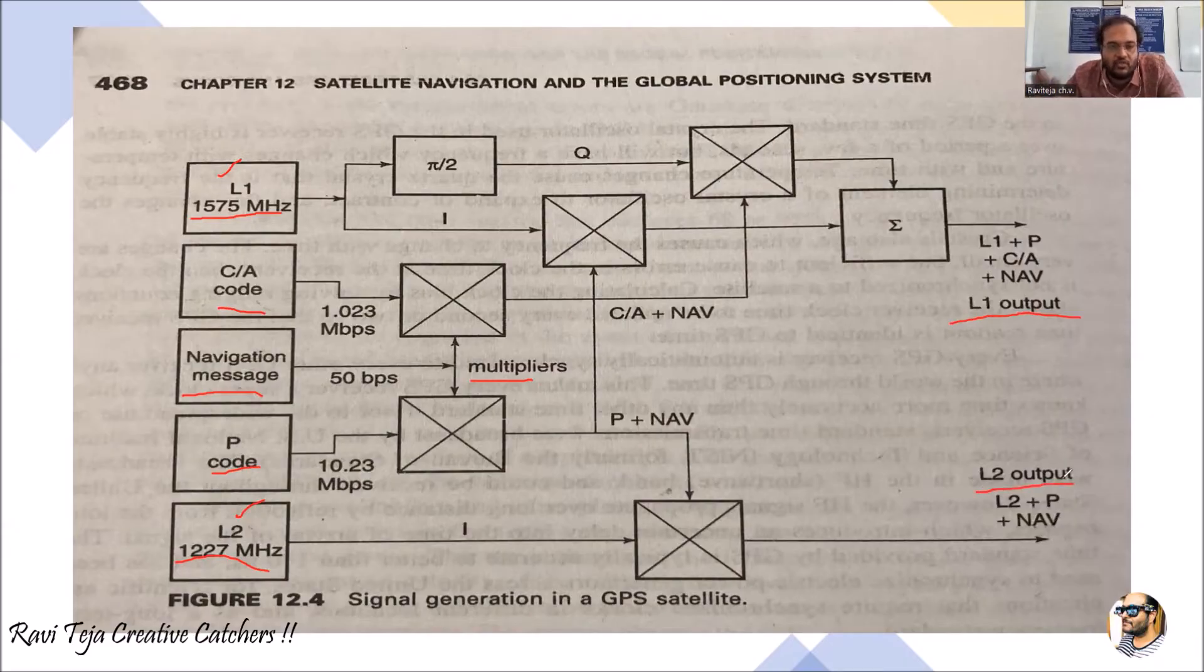So here what we are considering is two frequencies with respect to L1 and L2, and one message which we are considering as navigation message, and two codes - one is C/A code, another one is P code. All these are multiplied as well as summation.